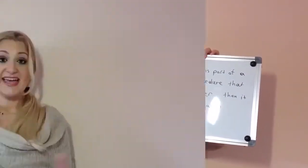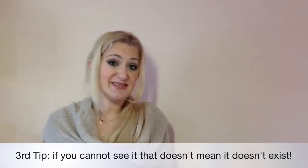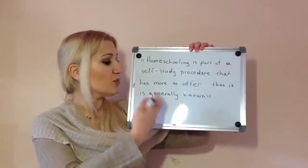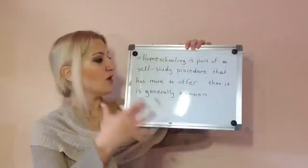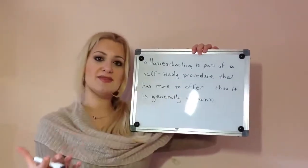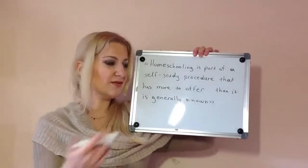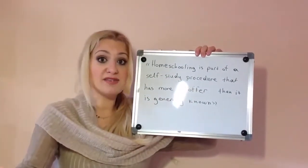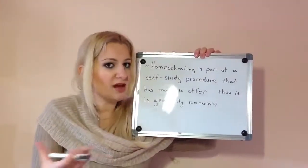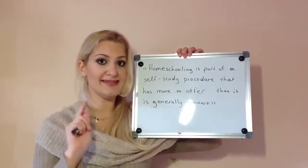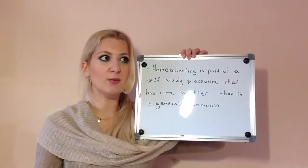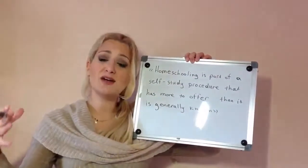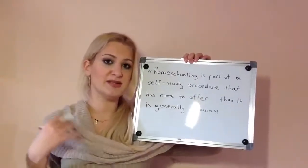And this takes us to tip number 3: If you cannot see it, that doesn't mean it doesn't exist. Taking the previous example — that homeschooling is part of a self-study procedure — it is never stated in the text, but that doesn't mean it is false. Homeschooling may be part of a self-study procedure; we just don't know it. This statement would be false only if the text said something like 'homeschooling is supposed to be part of a self-study procedure, but it is actually not that way because...' You know what I mean?